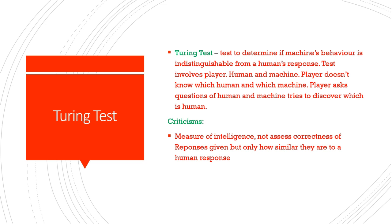So the Turing test — a man called Alan Turing came up with this. Alan Turing was a man of the Second World War who basically created the Enigma code and all that, and he essentially invented A.I. He made a test called the Turing test, which determines if a machine's behaviour is indistinguishable from a human's response. The test involves a player, a human, and a machine, but the player doesn't know which is the human and which is the machine. The player will ask questions to both, and they will both give answers, with the player trying to discover which is the human. The criticism is that the Turing test is a measure of intelligence and doesn't really assess the correctness of a response, but only how similar it is to a human response.